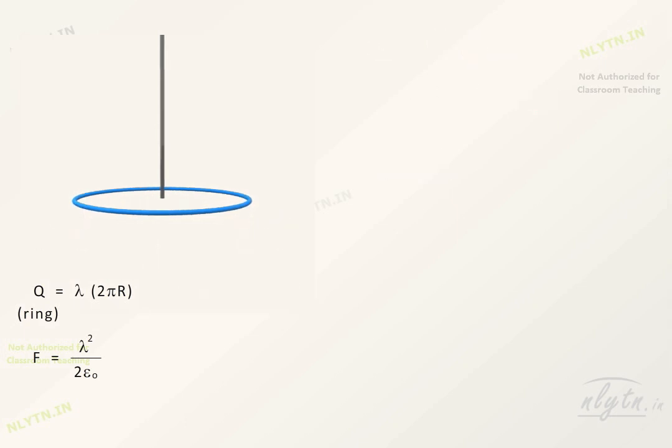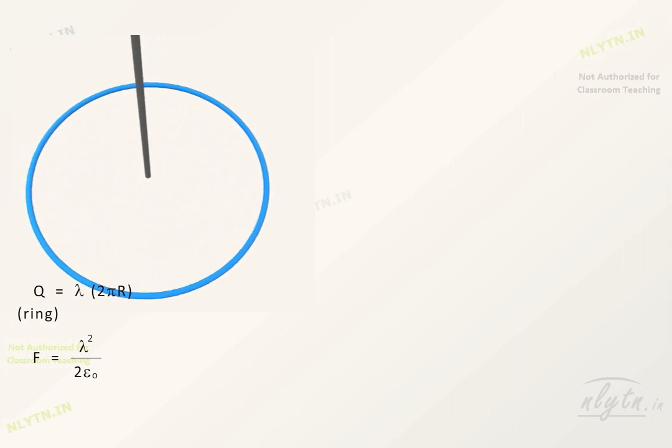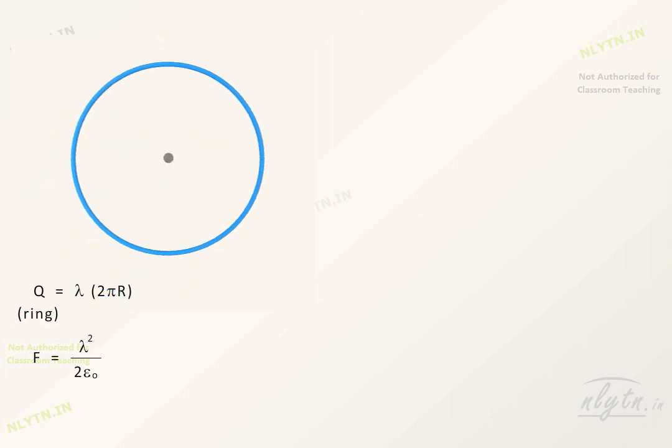Now, to find the increase in tension in the ring, let us consider a small section of ring like this. Component of force due to rod on this section in the plane of the ring is equal to this term.